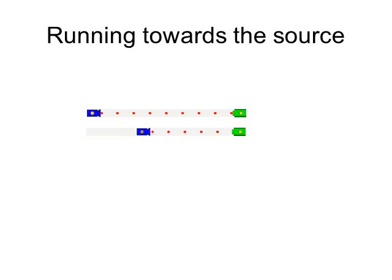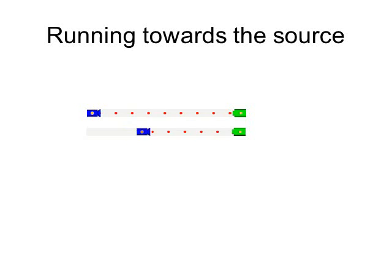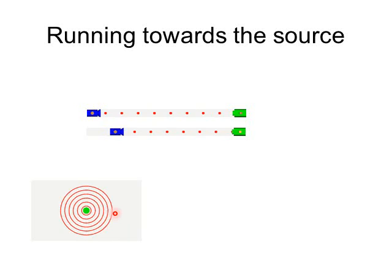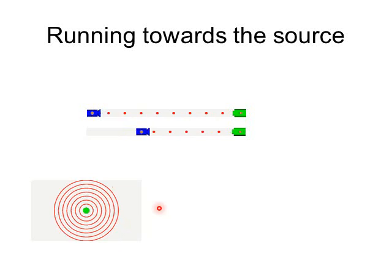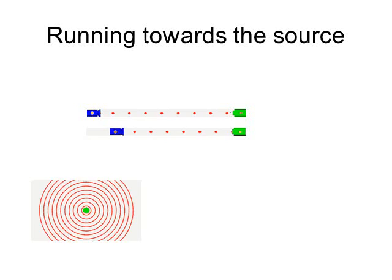This is similar to being on a highway — if you're both going 60 mph in opposite directions, the other car appears to be going 120 mph relative to you. Similarly, if a source is stationary and the observer runs toward the waves, the wavefronts hit the observer more often. In terms of sound, running toward the source makes it sound like a higher pitch.